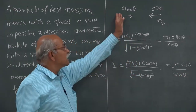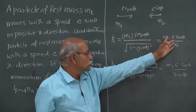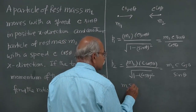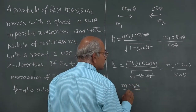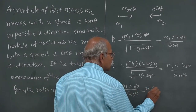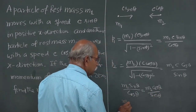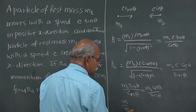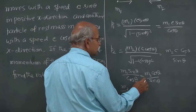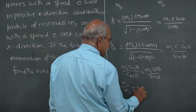Similarly, p₂, the magnitude of the linear momentum of the second particle, is m₂ times c·cosθ divided by √(1 − cos²θ), which simplifies to m₂·c·cosθ / sinθ. If the total linear momentum is 0, these two must have the same magnitude.